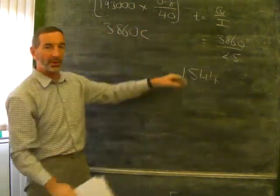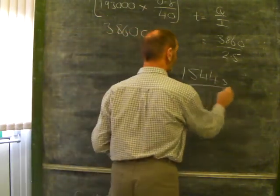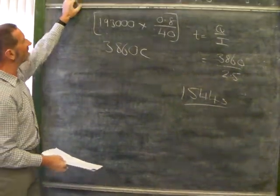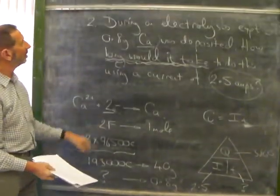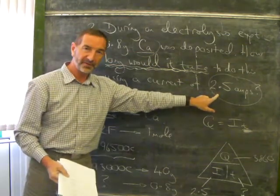1544, what? But we're dealing with time. This must be the time in seconds. In other words, it would take just over 1,500 seconds to deposit 0.8 grams of calcium using a current of 2.5 amps.